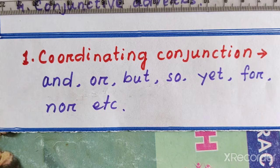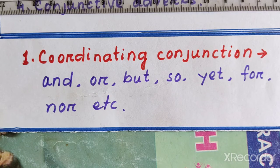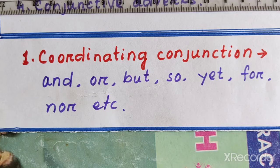We have to know first about coordinating conjunctions. These are words like: and, or, but, so, yet, for, and nor.